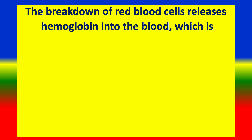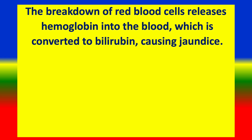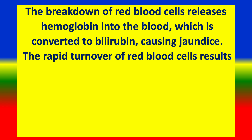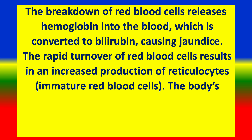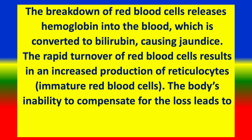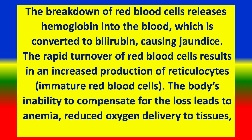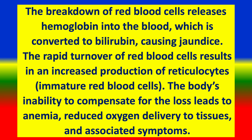The breakdown of red blood cells releases hemoglobin into the blood, which is converted to bilirubin, causing jaundice. The rapid turnover of red blood cells results in increased production of reticulocytes. The body's inability to compensate for the loss leads to anemia, reduced oxygen delivery to tissues, and associated symptoms.